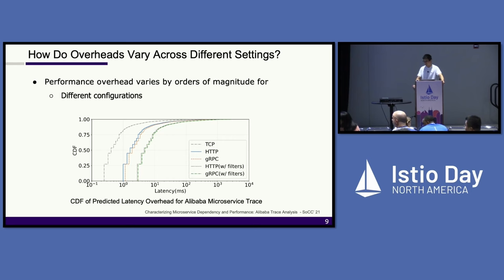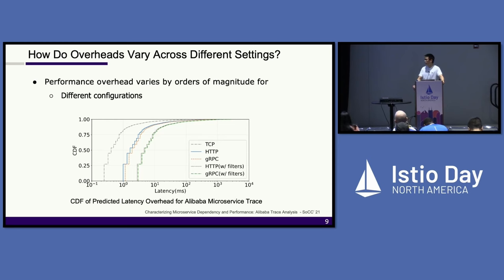Q: Do you have any solution in mind to utilize the benefits of Envoy sidecar while also optimizing performance? A: The purpose of this work is to break down the overhead and see what the primary contributors are. Previously at this conference there were talks on how to optimize data paths, for example using BPF, and replacing IPC with a lighter weight mechanism. Also, I think some work is pushing the proxy to the kernel to save on system call and context switch overheads.